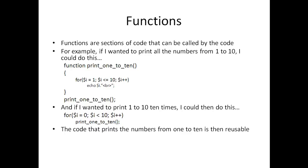If I wanted to print one to ten, ten times, I could do this: for i equals zero, while i is less than ten, i plus plus, print_one_to_ten. So now you have an example of the function print_one_to_ten, which breaks down an easy-to-accomplish task — a for loop that prints one to ten — and then I'm using another for loop to call print_one_to_ten, so in essence I'm getting it printed ten times. The code that prints numbers from one to ten is then reusable — I could take that function and put it in any PHP file I want and call it.